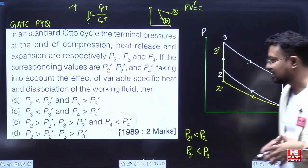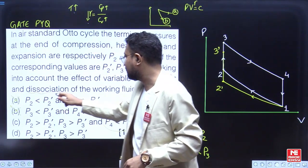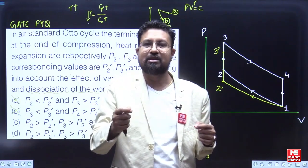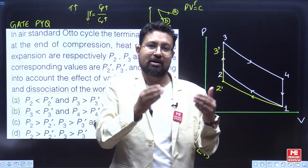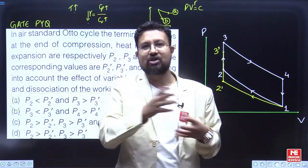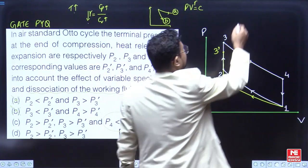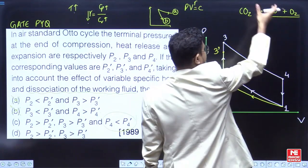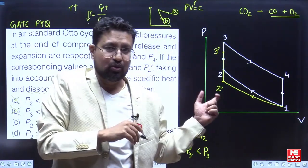The question also mentions dissociation of the working fluid. In IC engines, dissociation means the working fluid molecules break apart. For example, during combustion, carbon and oxygen join to form CO2, but dissociation can convert CO2 back into carbon monoxide (CO) and oxygen (O2).